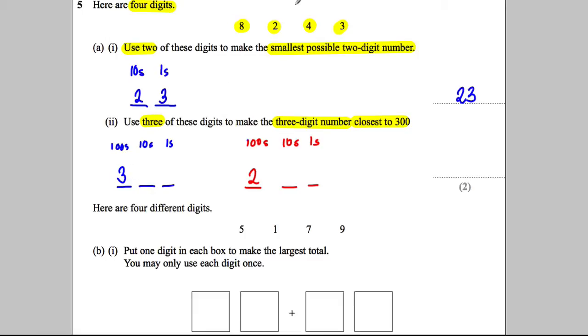So if I go back to this one, if I've chosen the three, I want to be as close as I can to 300. So I need the next smallest number, which would be 2 and having chosen that, the next smallest number, which would be 4. 324.